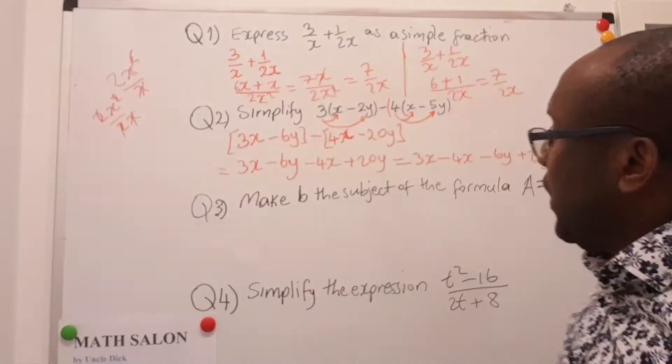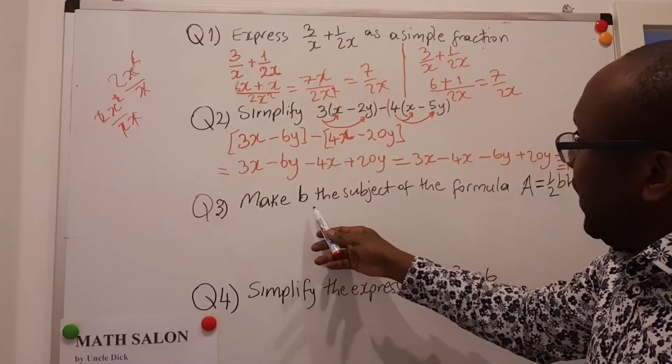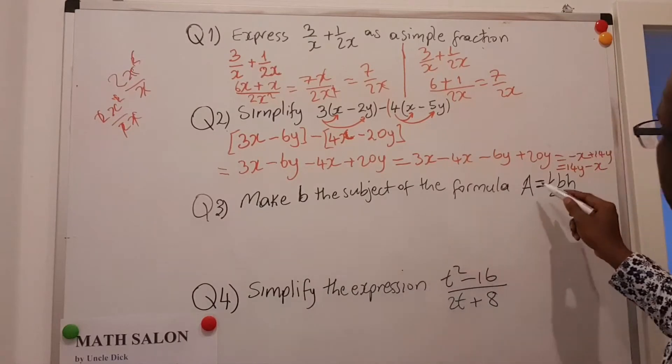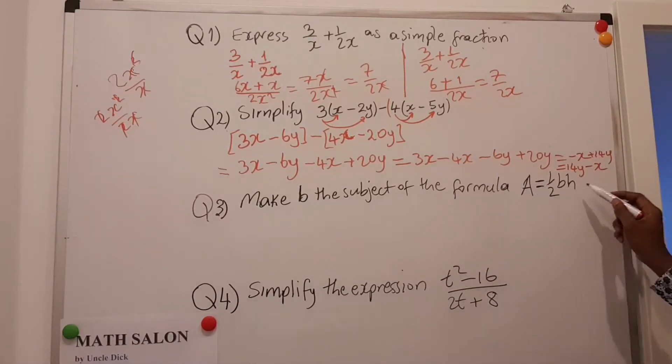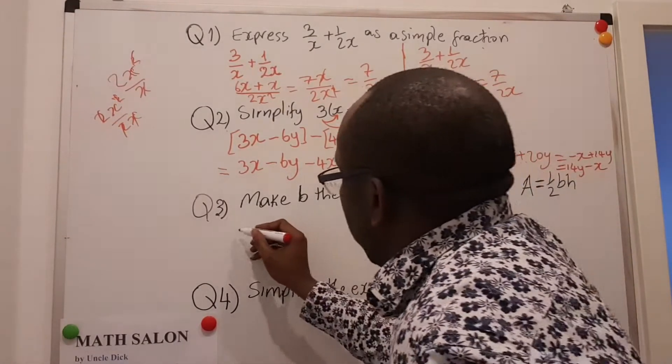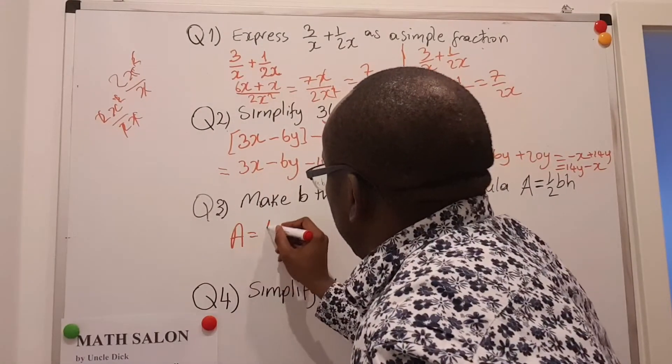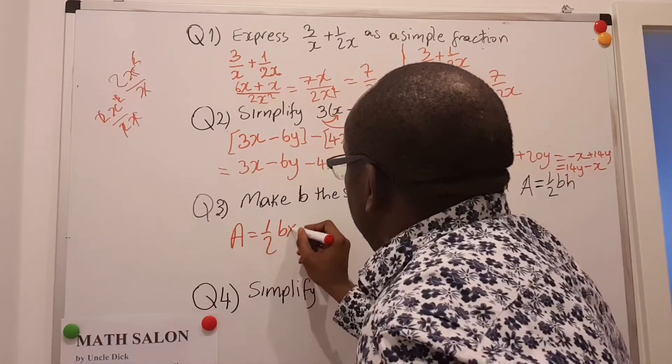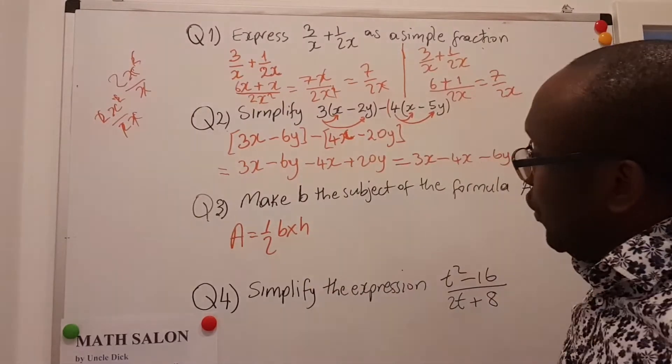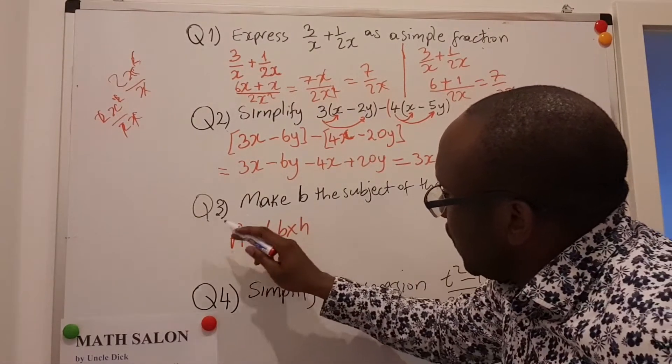Question number 3. It says make B the subject of the formula A is equal to half B multiplied by H. A is equal to half B multiplied by H. So here A is the subject of this formula.